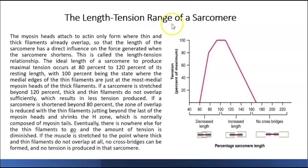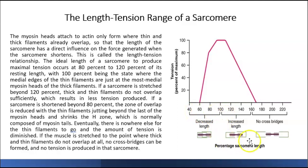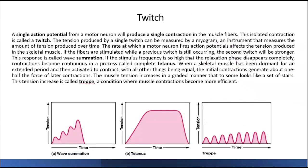The next concept is the length-tension relationship. Basically, this means that the best contraction you're going to get depends on how your muscle is positioned. If it's overly stretched or over-contracted, it will not get a good contraction. There is an optimum resting length which is going to give you the best contraction.